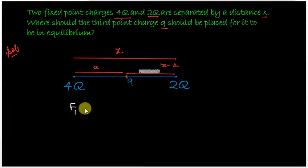Let F1 be the force on charge Q due to the charge 4Q. That would be Q times 4Q upon 4πε₀r². My r here would be a, so a² - that's equation number 1.